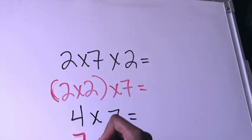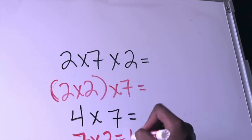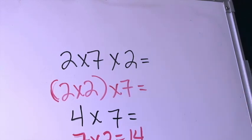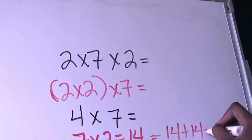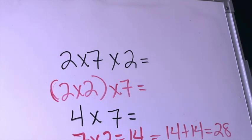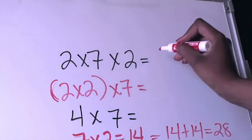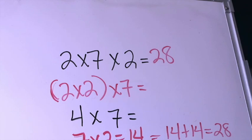I know that 7×2 is going to be 14 and I'm just going to double 14 and that's going to give me 14+14 and I know that that's going to be 28. That tells me that 2×7×2 is going to be 28.